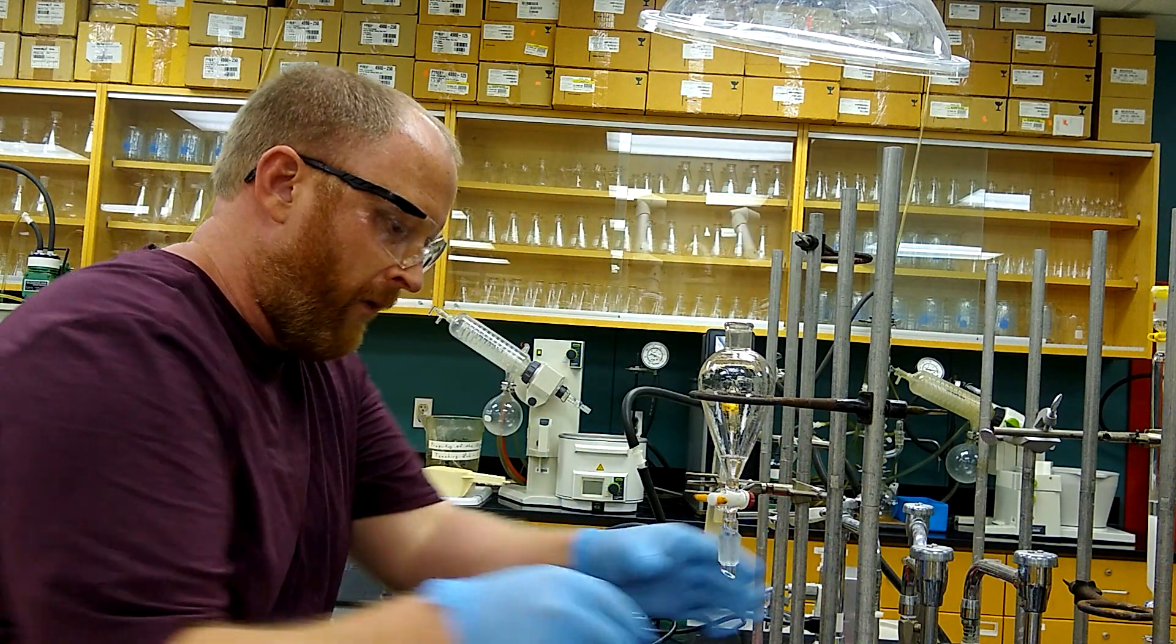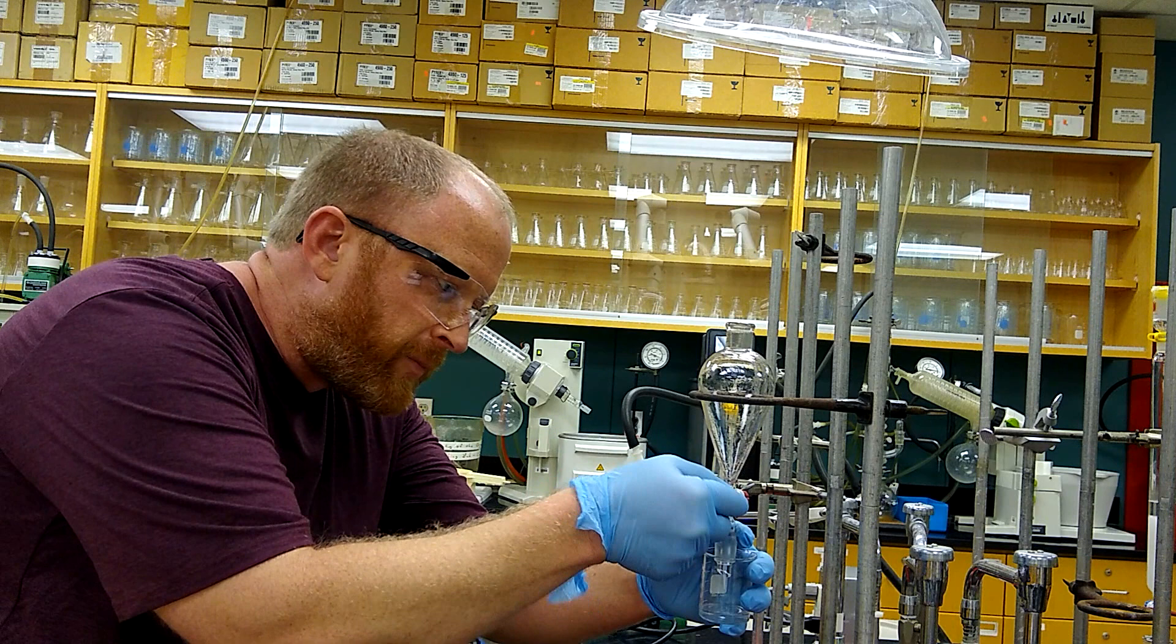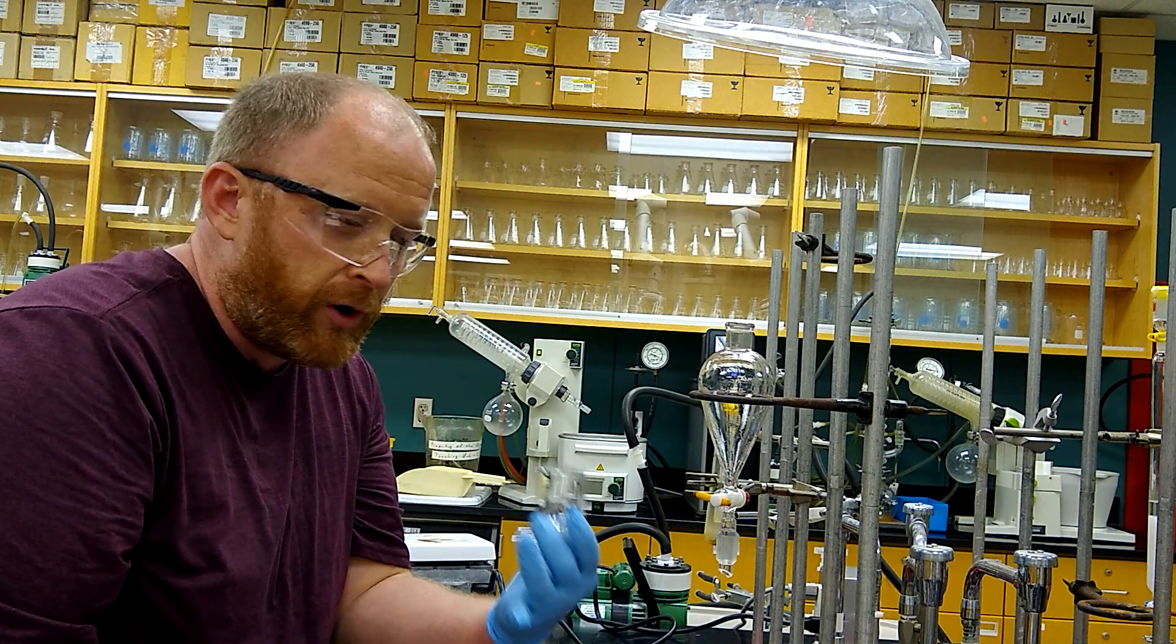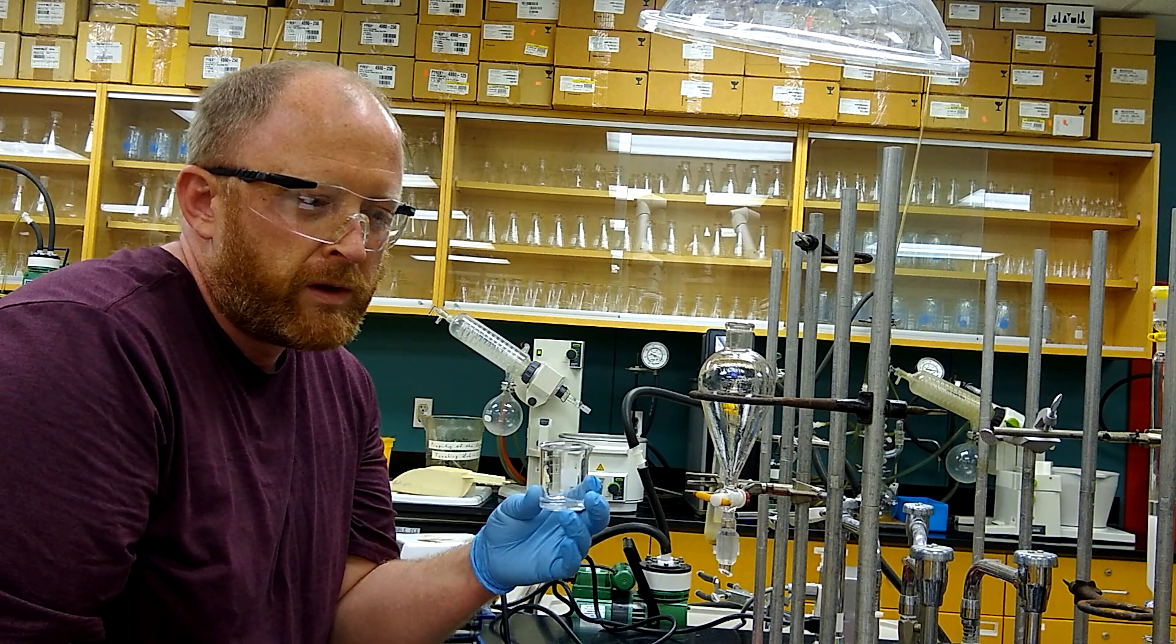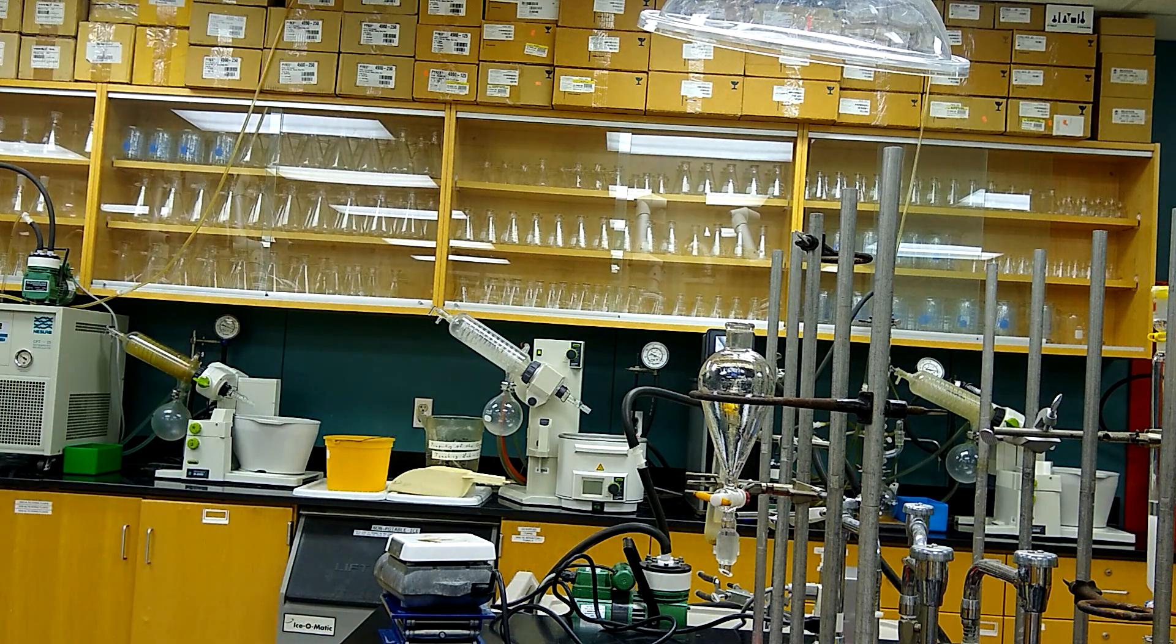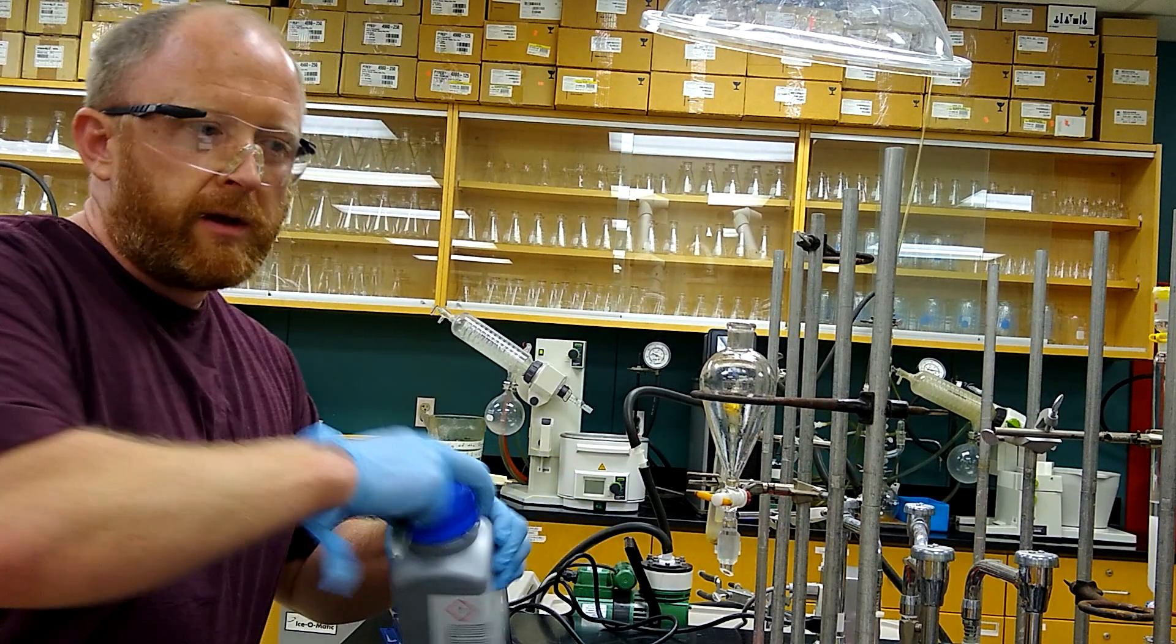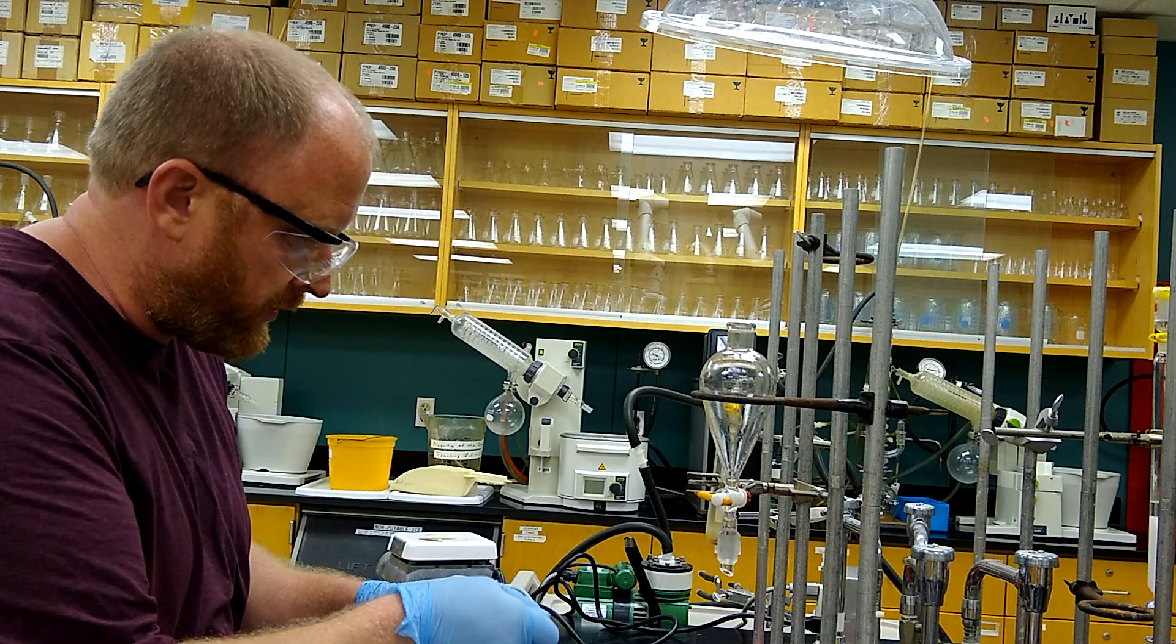What we should have at this point in the ether layer is some of our product, the propyl tolyl ether, and then there will be some of the excess bromopropane since we used an excess relative to the cresol. Now since we could have some traces of water from the water wash, I'm just going to add a little bit of drying agent.